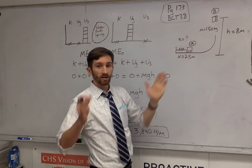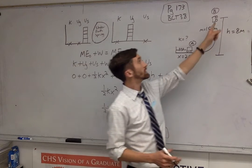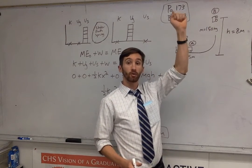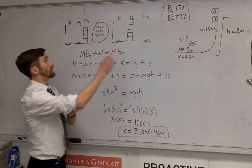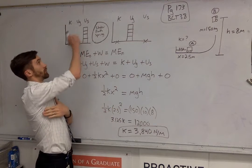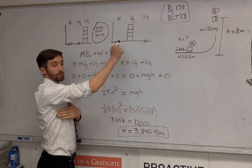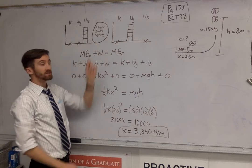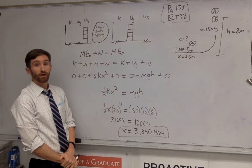So we've got point A here where it's pressing the spring, point B here where it reaches the highest point up in the air. On our LOL chart, I've got point A and point B. I've described my system as the skater, the earth, and the spring.